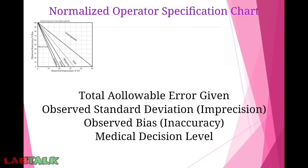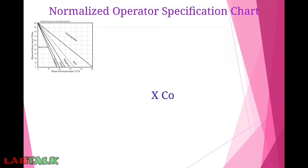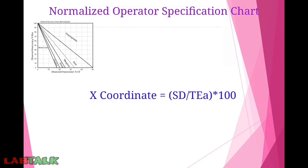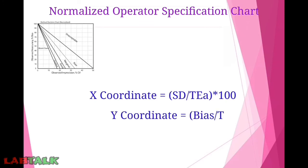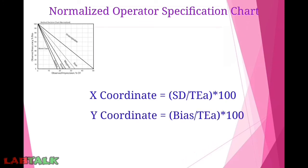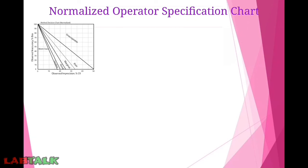The x-coordinate is calculated as: SD divided by total allowable error, multiplied by 100. The y-coordinate is calculated as: bias divided by total allowable error, multiplied by 100. Both coordinates come out as percentages.